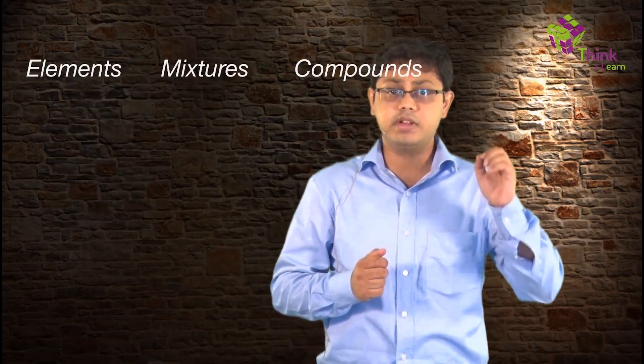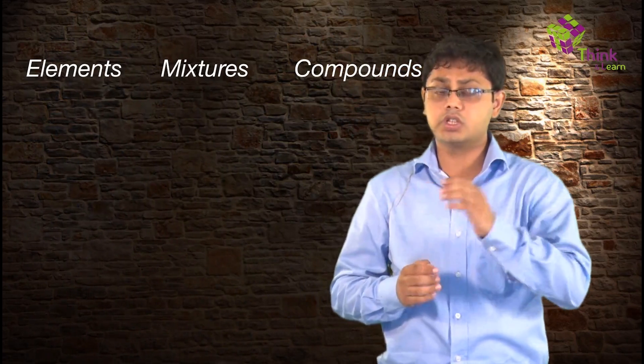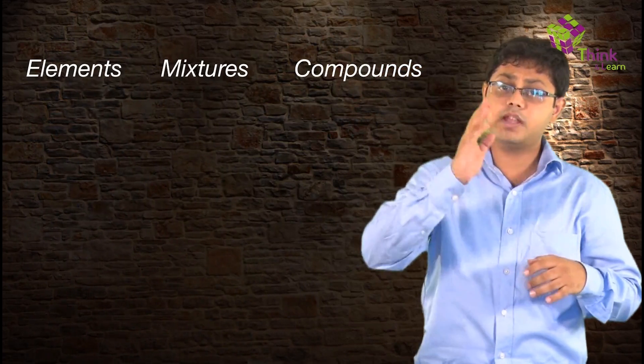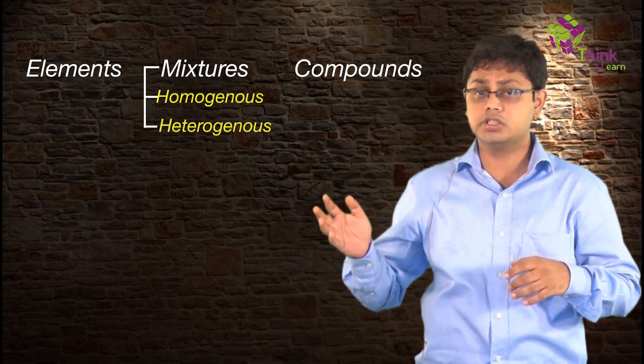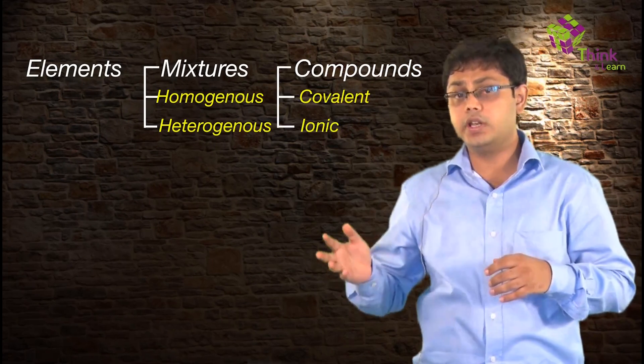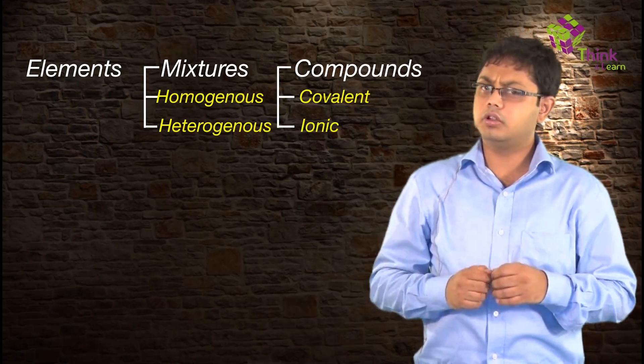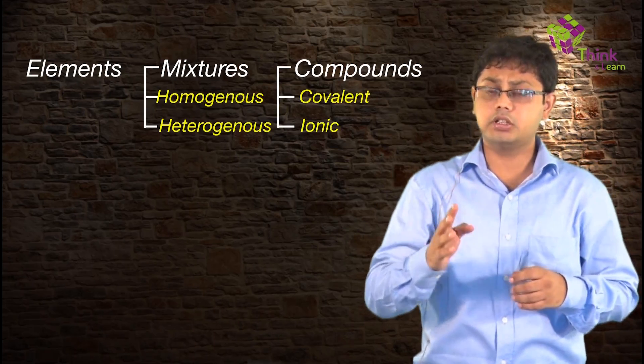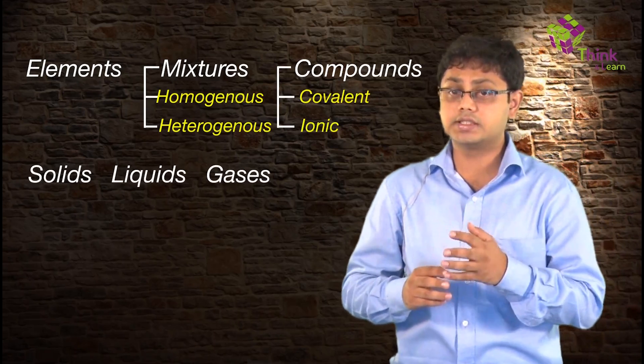Chemistry is all about the study of matter, and there is so much matter all around us that we will be overwhelmed if we don't classify it. Till now in chemistry you have already classified matter in multiple ways: first as elements, mixtures, and compounds; then mixtures as homogeneous and heterogeneous; and compounds as covalent and ionic. Don't forget we also classified matter as solids, liquids, and gases.